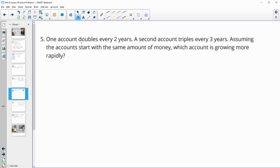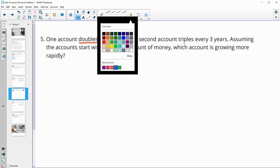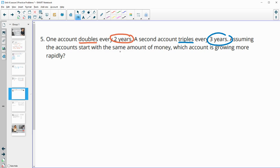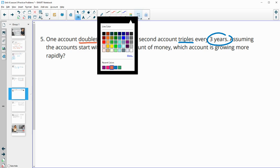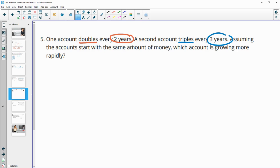Number five, one account doubles every two years. A second account triples every three years. Assuming they start with the same amount of money, which account is growing more rapidly? So we have to figure out how much they're growing each year so that we can compare them instead of just looking at two years and three years. So this one has a growth factor of two. And then we want to do one half of its doubling period. Since this is two years, so we'll split it down to one half. And so then if you do that in your calculator, you get that this one is at 1.41. So growing at a factor of 1.41.